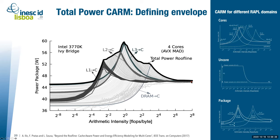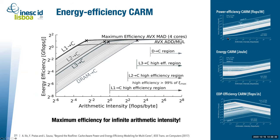We defined several models: for the cores domain, the uncore domain, and for the package. Since we had both power and performance models, we derived many efficiency models — power efficiency, energy, and EDP efficiency. The most interesting was the energy efficiency cache-aware roofline model, depicting maximum energy efficiency for different arithmetic intensities. Since the ridge point gives maximum performance but also maximum power, it does not correspond to maximum energy efficiency — which can only be obtained at infinite arithmetic intensity.